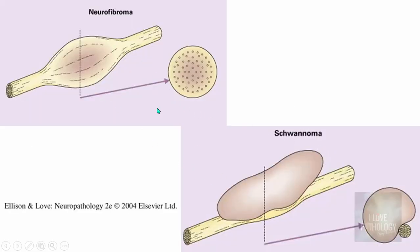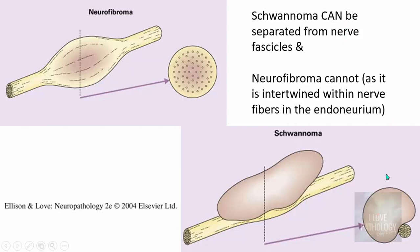Let's understand the differences between neurofibroma and schwannoma. Both are fusiform tumors. In neurofibroma, the tumor cells are intermingled with the native nerve, whereas in schwannoma the native nerve is separate and the tumor is eccentric in location. Schwannoma can be separated from the nerve fascicles, while neurofibroma cannot because it is intertwined within the nerve fibers in the endoneurium. This is why schwannoma can be easily excised without compromising the nerve, while neurofibroma cannot.